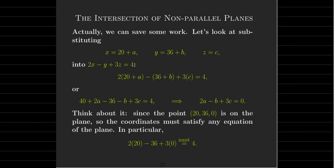it came from the fact that we had a point (20, 36, 0) which is on the plane. It's on both planes, and so it must satisfy the equation of the first plane and also the equation of the second plane.